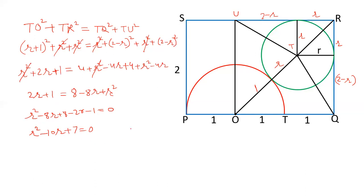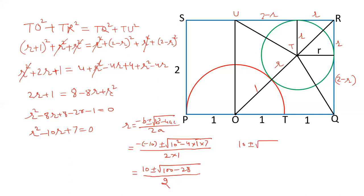And we have to solve this quadratic equation by the formula. R is equal to minus B plus minus square root of B square minus 4AC upon 2A. Value of B is minus 10. B square is 10 square. 4A is 1. C is 7 upon 2 into 1. This becomes 10 plus minus 10 square is 100. 100 minus 28.